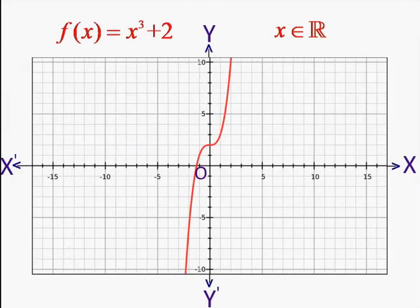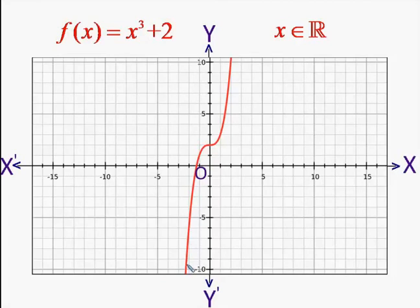The second function is f(x) = x³ + 2. Here we are simply adding 2 to x³. Therefore it will not make much difference — arguing the same way as before, we can see that the function can be made as large as possible and also as small as possible by varying the values of x. Therefore this function also does not have any maximum value, nor will it attain any minimum value.